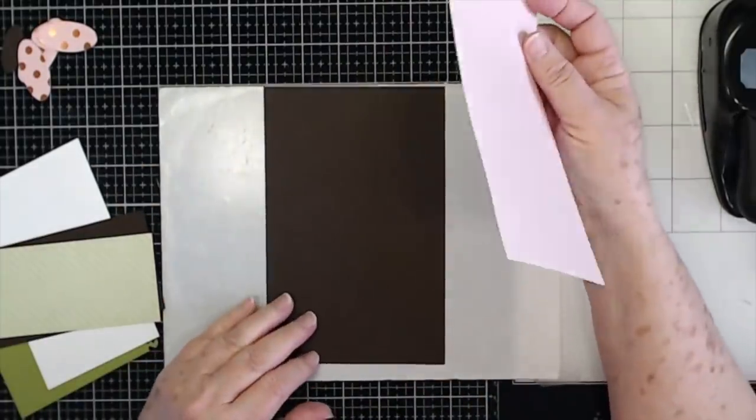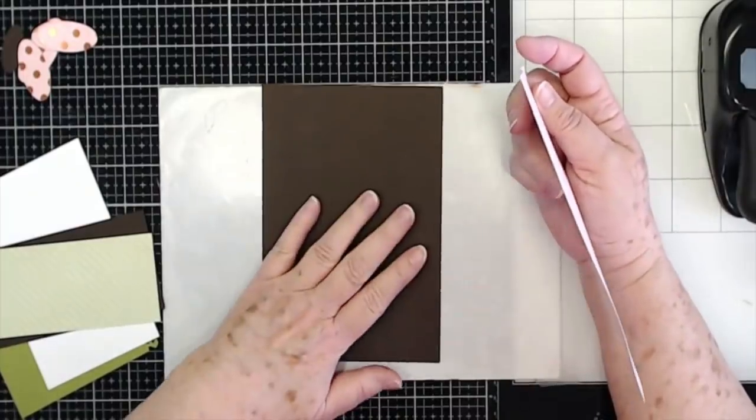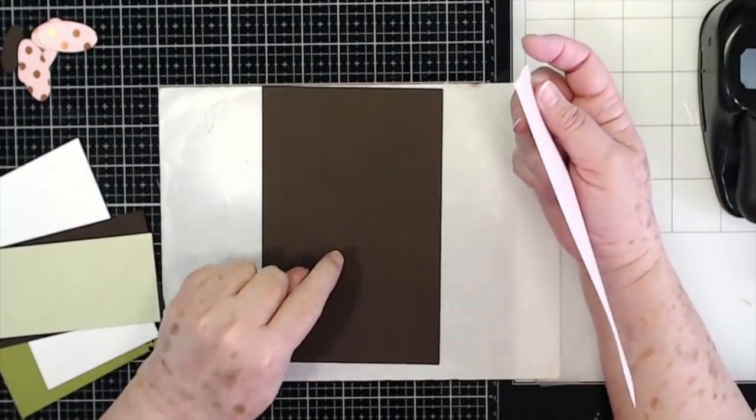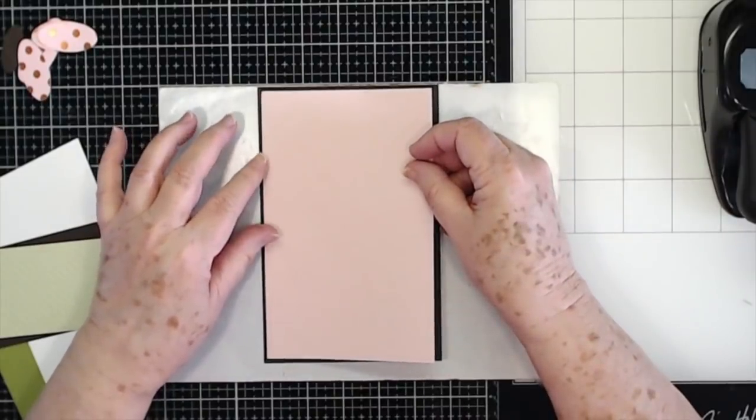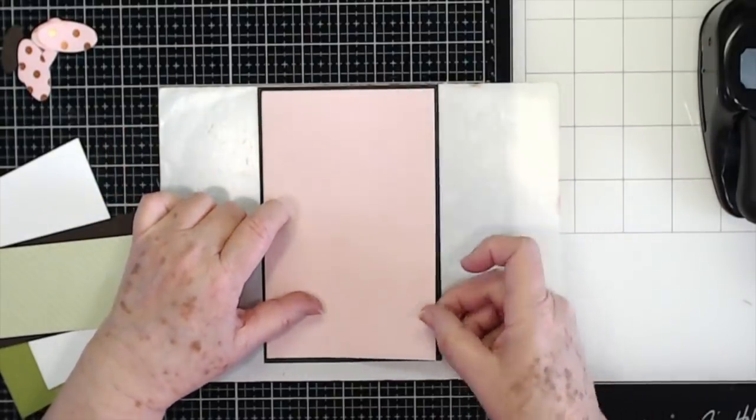But this is going to be a card front, it's going to be a five by seven card. So this piece is five by seven, this one is five and three quarters by six and three quarters, and we're going to glue that down there.